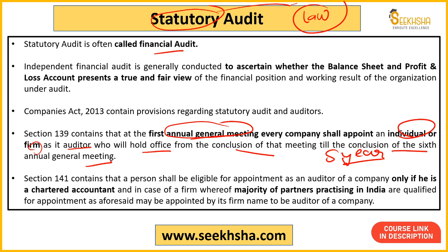Section 141 of the Companies Act contains eligibility provisions — who can be appointed as auditor. I cannot be made an auditor; if you are also not a CA, you cannot be made an auditor. The first requirement to become an auditor is to be a Chartered Accountant. If you are giving auditing work to a firm, then the majority of partners in that firm must be qualified as CAs. If a firm has five partners and only one is a CA, that firm cannot be appointed as auditor.